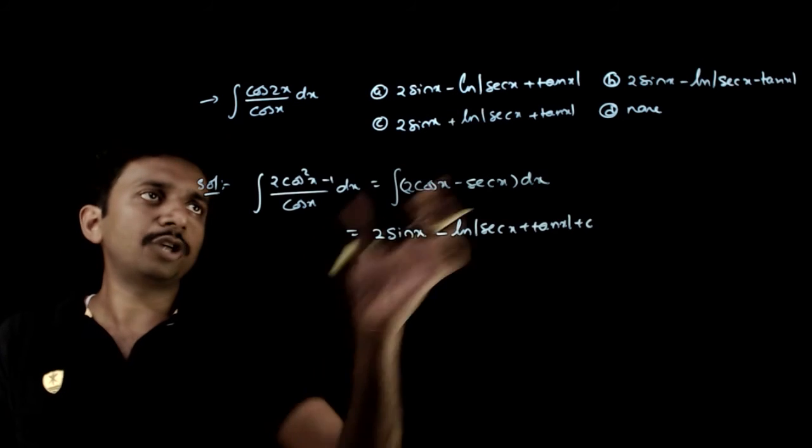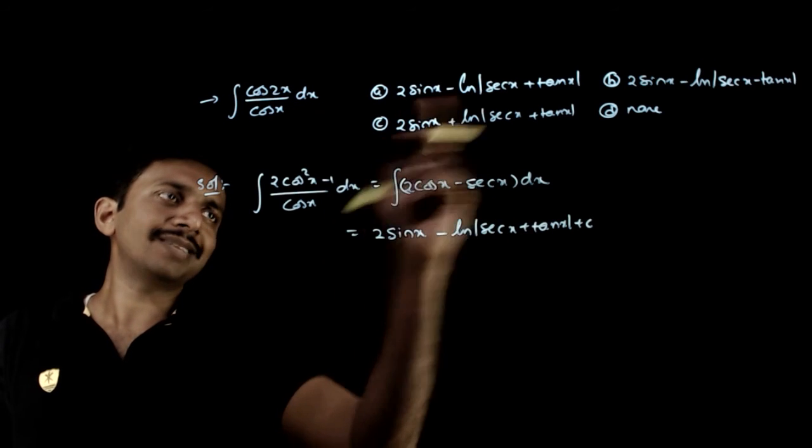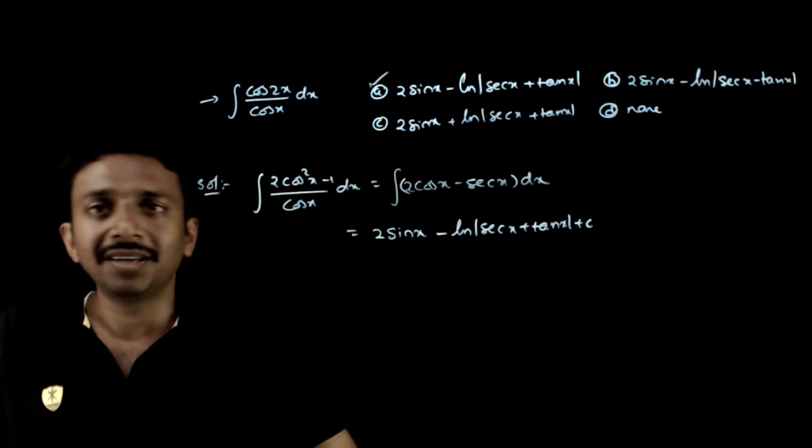So which option is the right option? 2sin x minus log of sec x plus tan x. So option A is the right answer. Thank you.